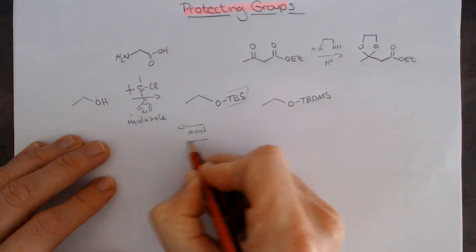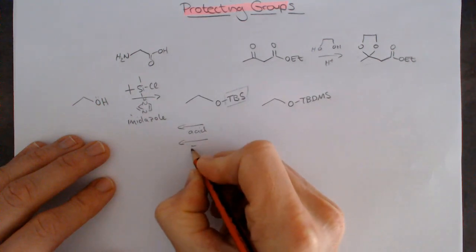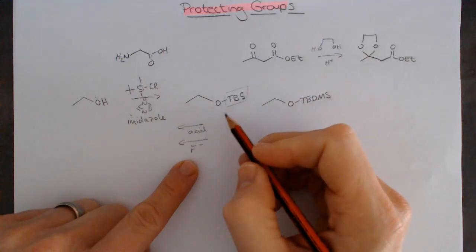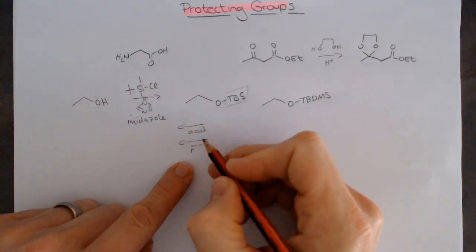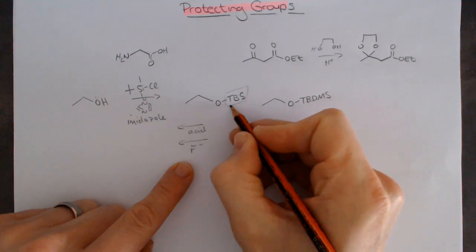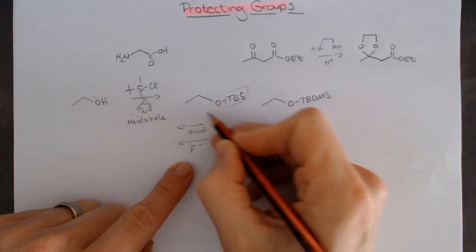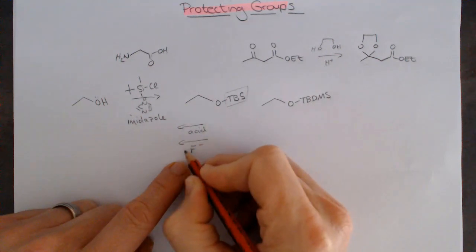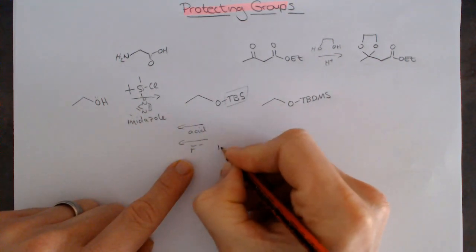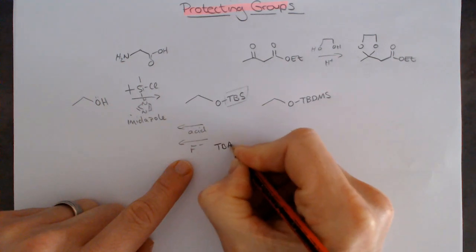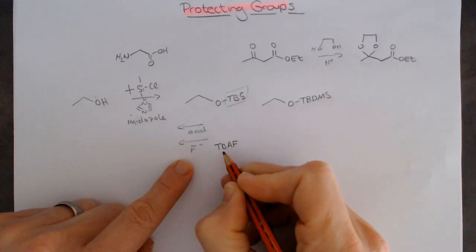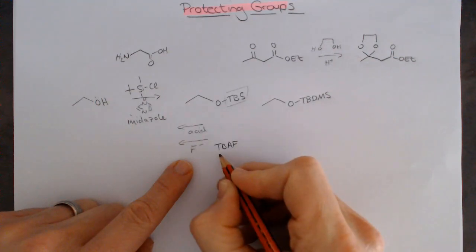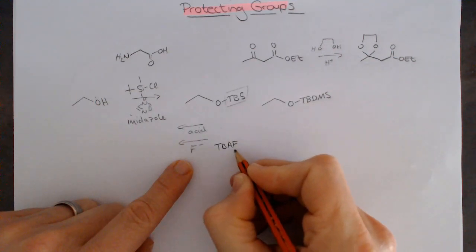More typically, the way to remove it is with some kind of fluoride ion, F-. Silicon and fluorine love each other. An F- ion is able to add to the silicon and cleave the oxygen-silicon bond. The form of F- we often use is in a molecule called TBAF, tetrabutyl ammonium fluoride.